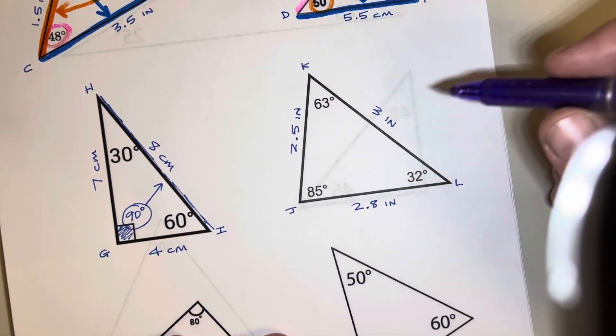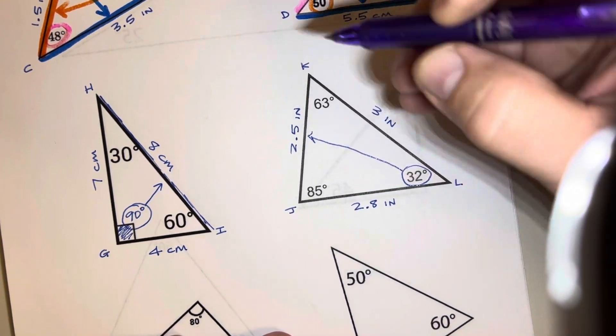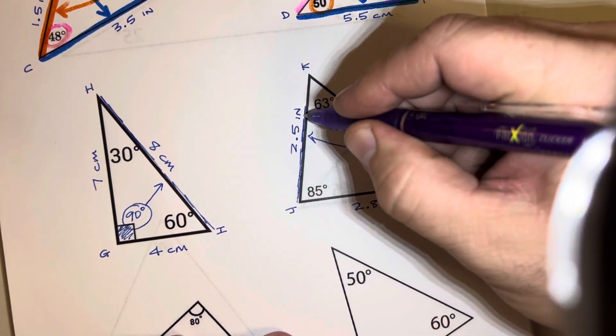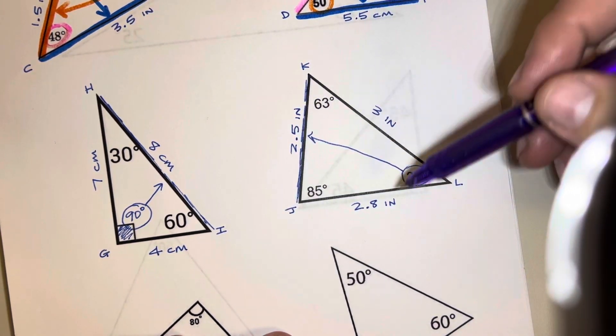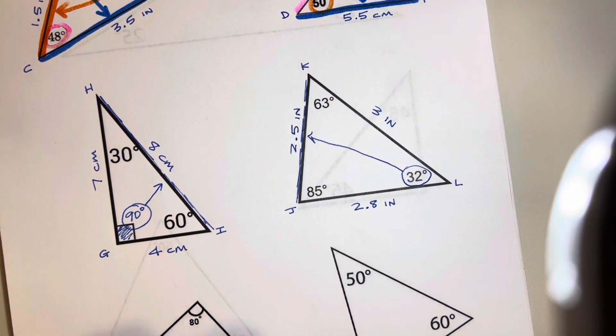And if we look at this one over here, we have 32 is the smallest angle. So that means it's going to be across from the smallest side. And 2.5 is definitely smaller than 2.8 and 3. I know it's only a little smaller, but it's still smaller.